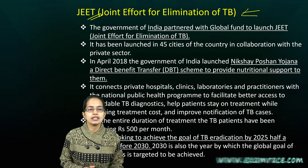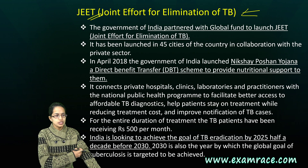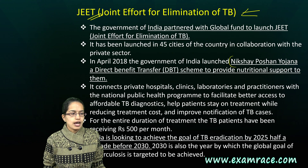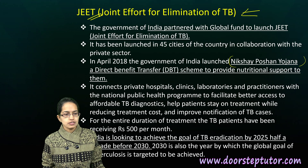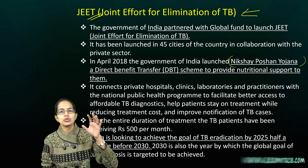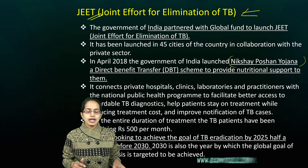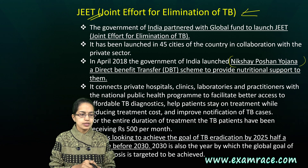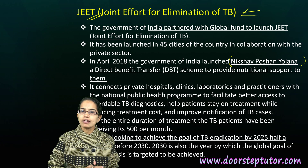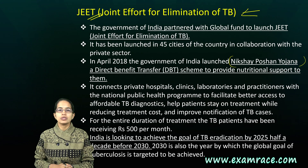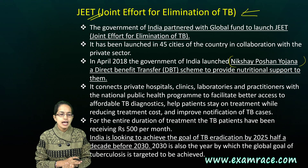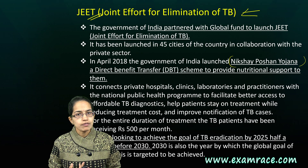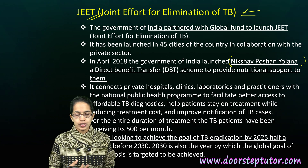India has partnered with the Global Fund for the launch of JIT. By 2018, we focused on the Nikshay Poshan Abhiyan, a direct benefit transfer scheme providing nutritional support to TB patients. We are also connecting private clinics, hospitals, and laboratories for the same purpose. Nearly 500 rupees per month would be allotted to each TB patient. India aims to reduce TB patients by half by 2025 and eliminate it by 2030.